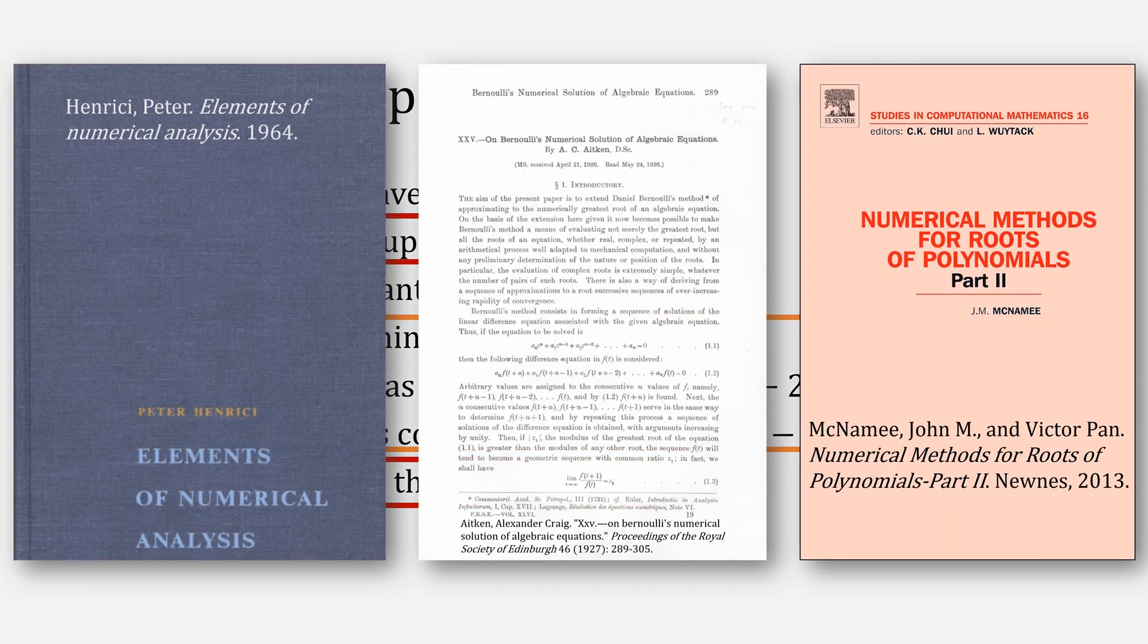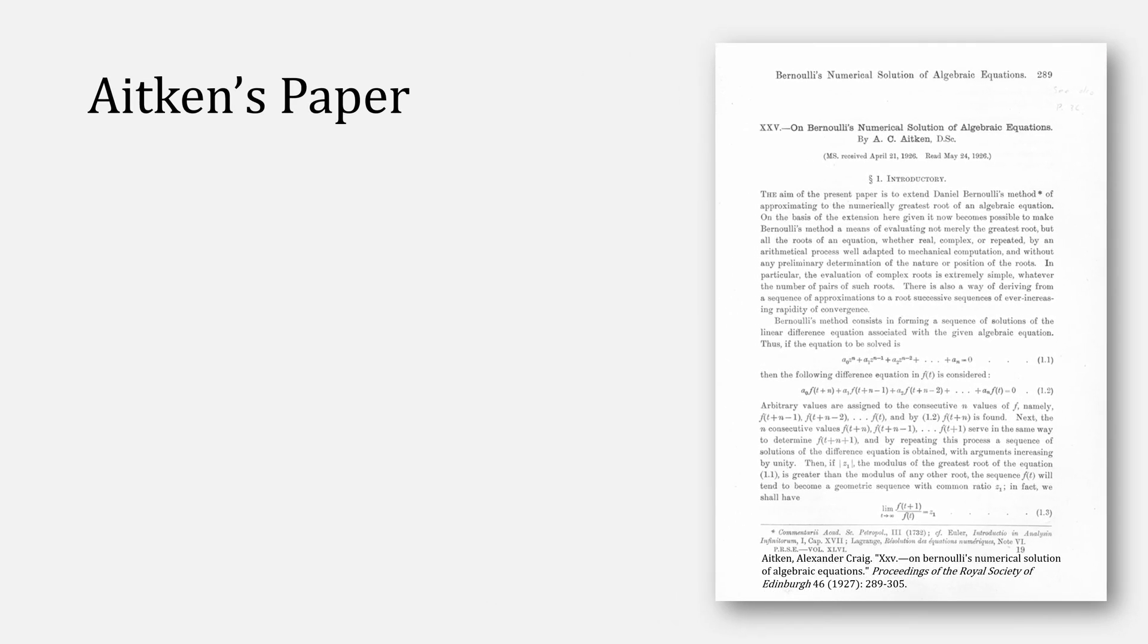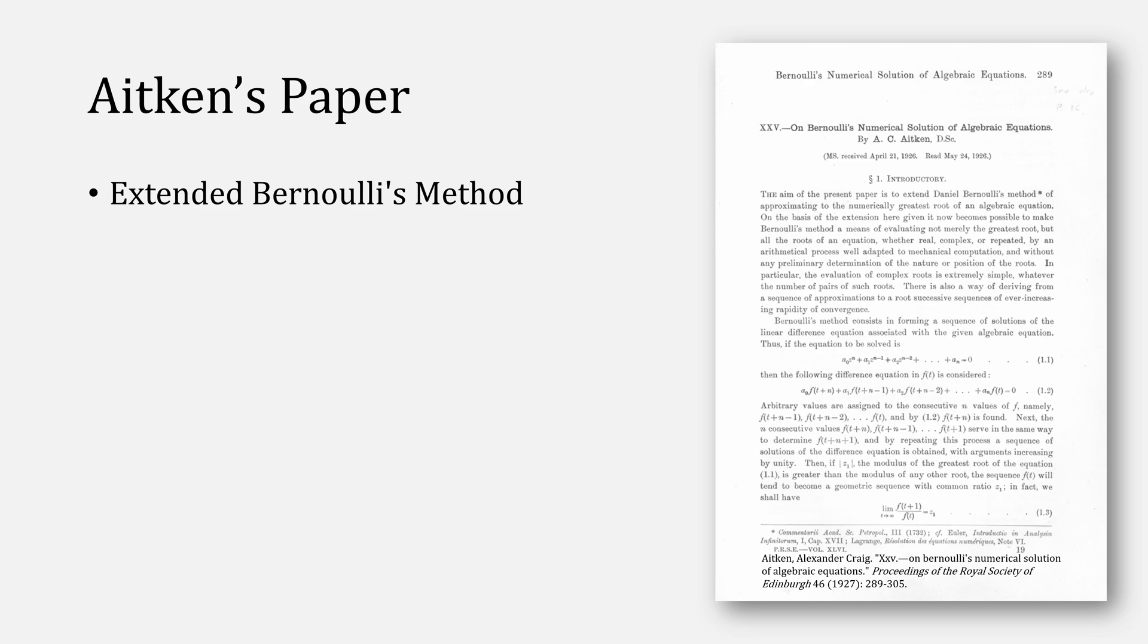Let's look again at Aitken's paper. In this paper, Aitken extends Bernoulli's method to find all of the roots simultaneously, including real, complex, and dealing with multiplicity, as well as including a way to speed up the convergence.